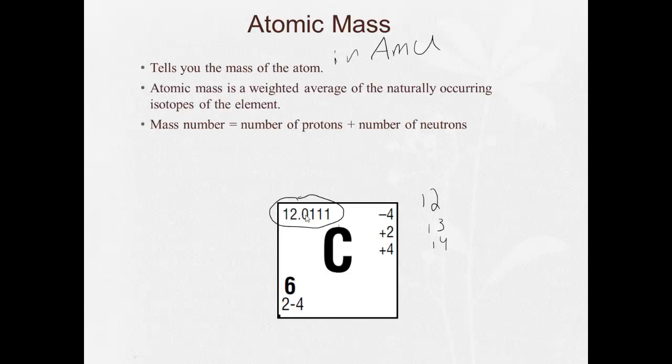Now, the mass number, so let's say we just treat this as 12, and we're going to talk about carbon 12. It's the number of protons plus the number of neutrons. Remember, protons have a mass of 1 AMU. Neutrons have a mass of 1 AMU. So if we add up all the protons and all the neutrons, we get the mass number.